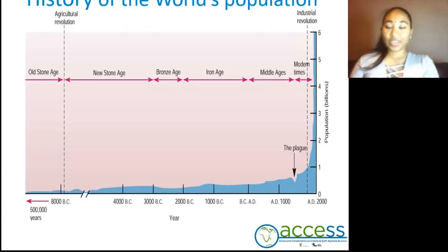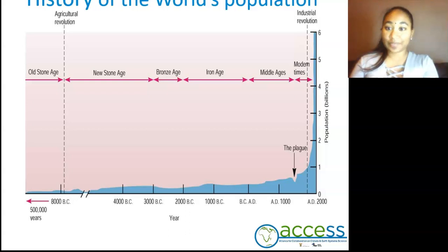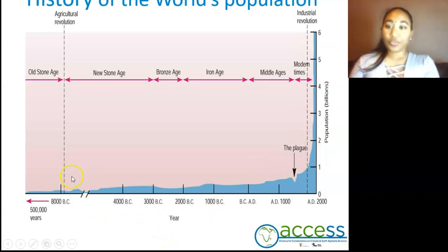To further understand demography, we have the history of the world's population graph. This is a graph that represents the population from the old stone age to modern day times. On the y-axis we have population in billions, and years on our x-axis. Before the agricultural revolution, the population growth was consistent. As we move past the agricultural revolution, we start to see a gradual increase in the human population.